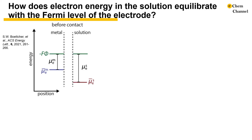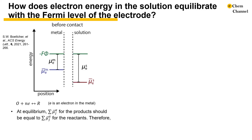The next example is the interface between a metal and an inert electrolyte that contains 10 millimolar of a redox couple with both the oxidized and reduced forms present. The fundamental question here is, how does electron energy in the solution equilibrate with the Fermi level of the electrode? Initially, the electrochemical potential of electrons is different in the metal electrode and solution. The electrochemical reaction at the metal-electrolyte interface goes as this equation, where the electron is residing in the metal. At equilibrium, the sum of the electrochemical potential of the products is equal to that of the reactants. Even though there are no free electrons in the solution, the electrochemical potential change associated with moving an electron into the bulk of a solution via redox reaction defines a solution Fermi level.